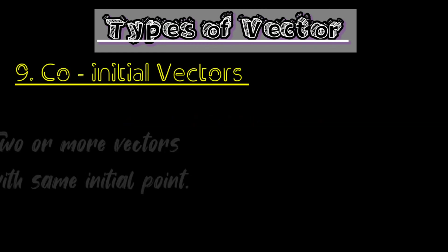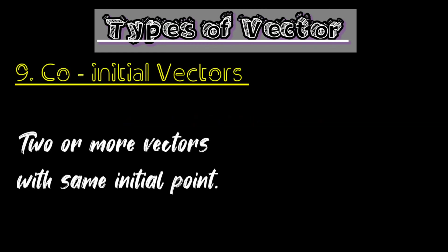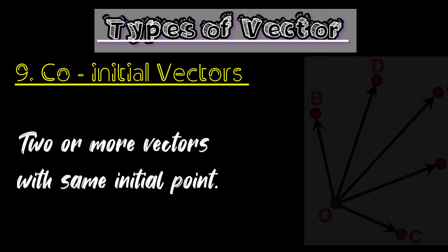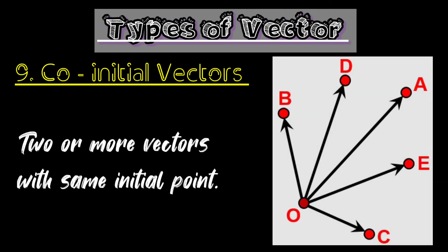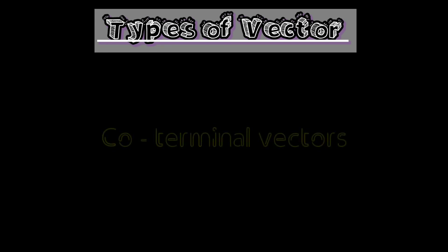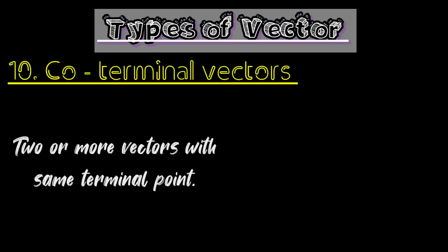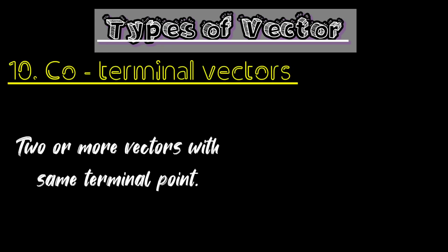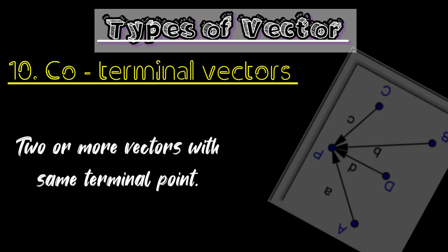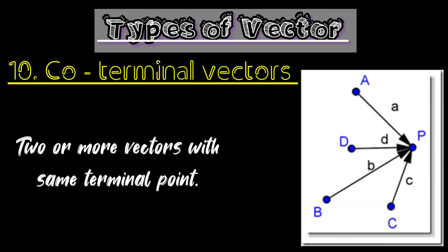Co-initial vectors: two or more vectors with the same initial point are known as co-initial vectors. Additionally, two or more vectors with the same terminal point are known as co-terminal vectors.